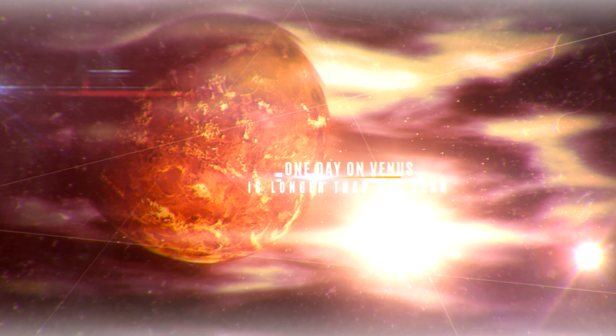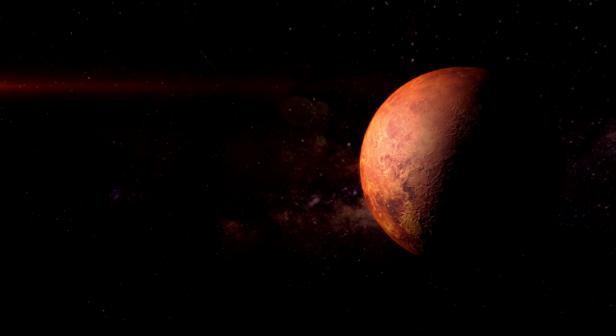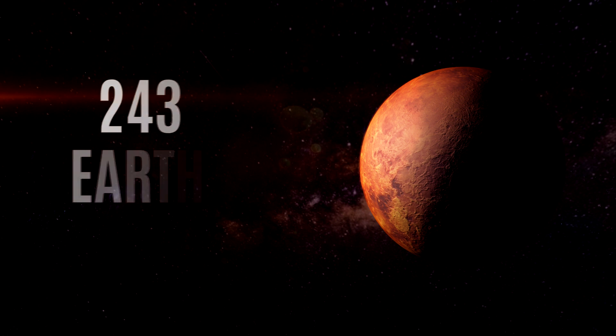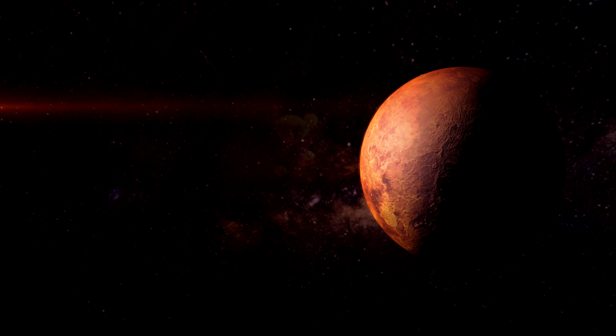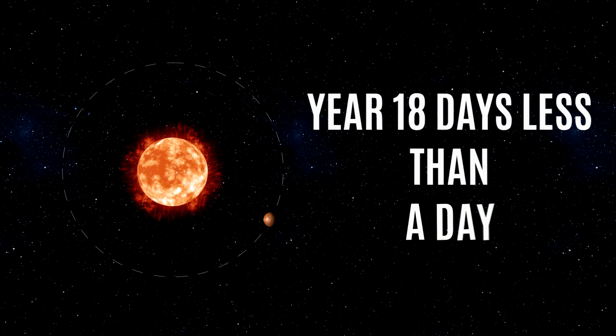One day on Venus is longer than one year. Venus has a slow axis rotation, which takes 243 Earth days to complete its day. The orbit of Venus around the Sun is 225 Earth days, making a year on Venus 18 days less than a day on Venus.